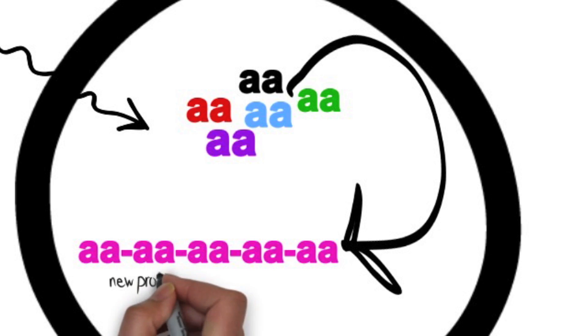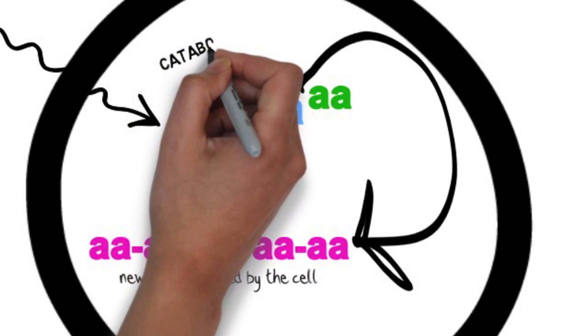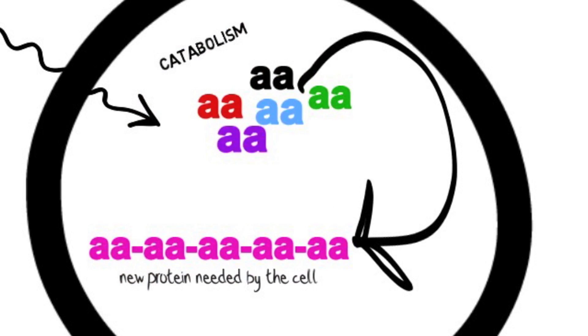Reactions that break down macromolecules are called catabolic, and all the reactions involved in breaking down macromolecules in order to produce smaller molecules is what we call catabolism.